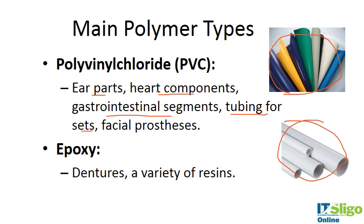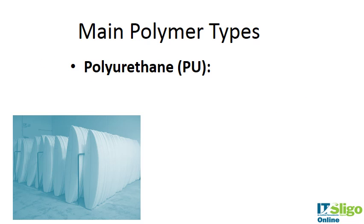Epoxies are a different type of polymer used in dentures and resins. They are thermoset, meaning once set they cannot be remolded. Epoxy resins would be used in medical device manufacturing.